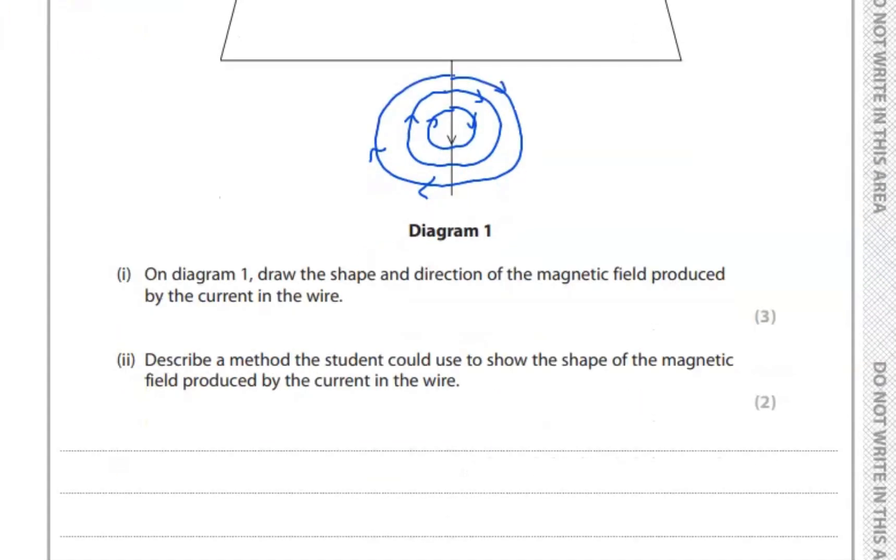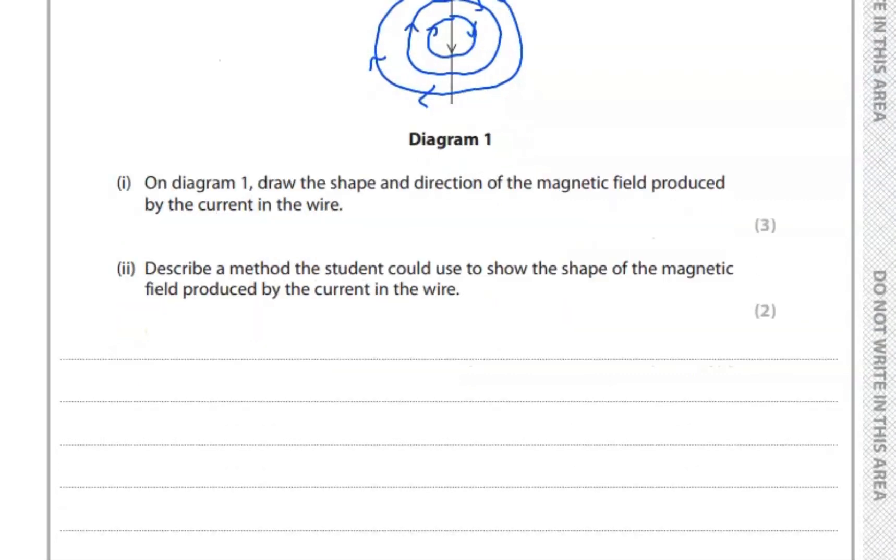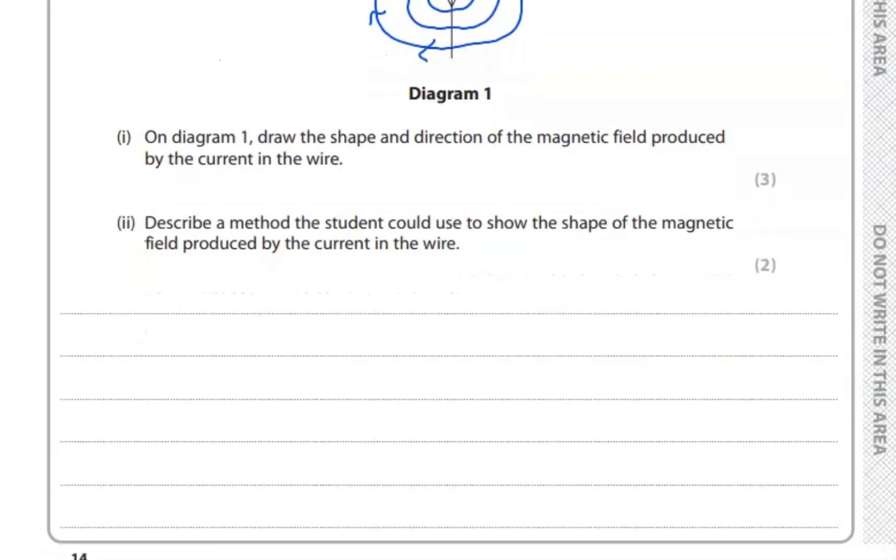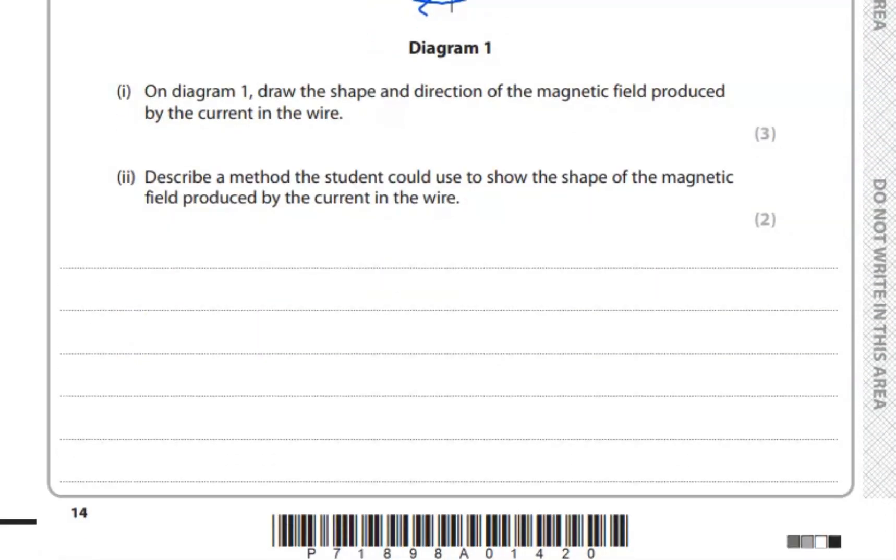Let's move to the next part. On diagram one draw - okay, we did this. Part two: describe a method the student could use to show the shape of the magnetic field produced by the current in the wire.